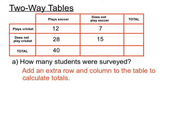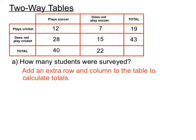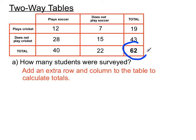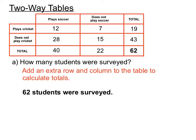The total of people who play soccer adds up the two numbers above it — forty people altogether play soccer. The next total of twenty-two are people who do not play soccer. There are nineteen people in the top row who play cricket, and forty-three in the second row who do not play cricket. Whether you add up the row totals or the column totals, you should get the same number — sixty-two altogether. So 62 students were surveyed in total.